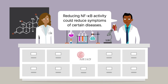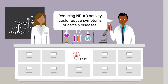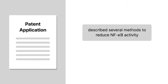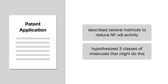Ariad filed for a patent describing several methods of reducing NF-kappa-B activity in cells and hypothesizing three classes of molecules that might do this: specific inhibitors, dominantly interfering molecules, and decoy molecules.